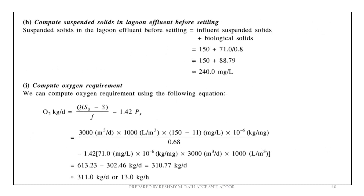The next step is to calculate the suspended solids. For effluent before settling, the biological solids equal 0.8 × MLSS. This gives approximately 71 / 0.8 MLSS, approximately 240 mg/L. The oxygen requirement is then calculated using the full equation, giving approximately 311 kg/day or 13 kg/hour.